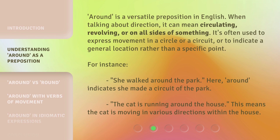Around is a versatile preposition in English. When talking about direction, it can mean circulating, revolving, or on all sides of something. It's often used to express movement in a circle or a circuit, or to indicate a general location rather than a specific point.